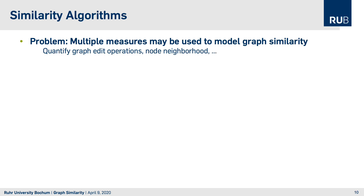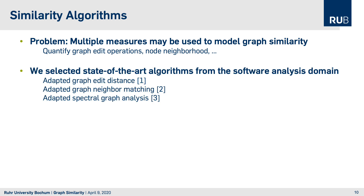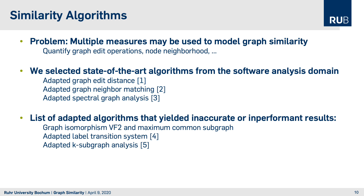After pre-processing the netlist we can apply the similarity algorithms. The question is how do we measure graph similarity — by quantifying graph edit operations or known neighborhood. We selected several state-of-the-art algorithms from the software analysis domain: adapted graph edit distance, adapted graph neighbor matching, and adapted spectral graph analysis. Algorithms that produced inaccurate or poor performance results include graph algorithms HISMV F2 and maximum common subgraph from the C++ Boost library, adapted label transition systems, and adapted k-subgraph analysis.